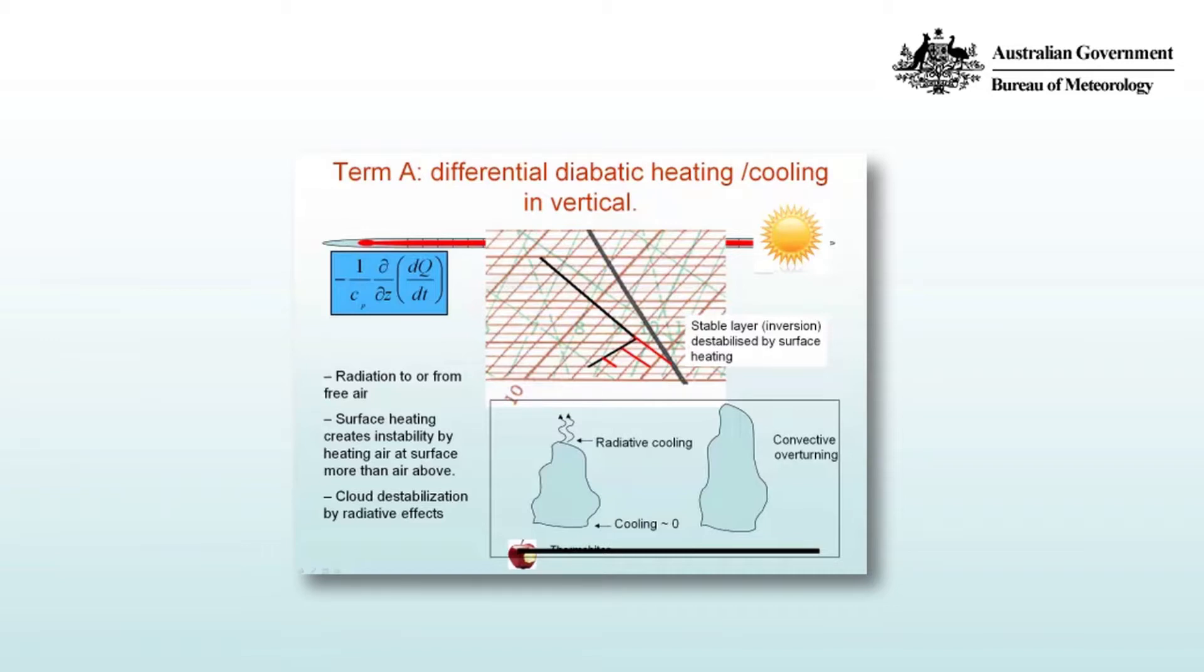Now think about the example of a cloud at night. The base of the cloud keeps roughly the same temperature, whereas the top of the cloud will cool radiatively.